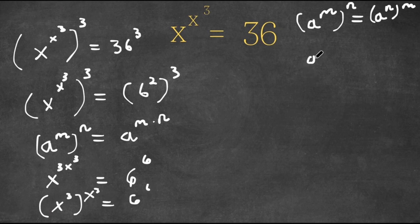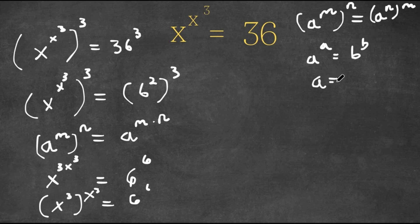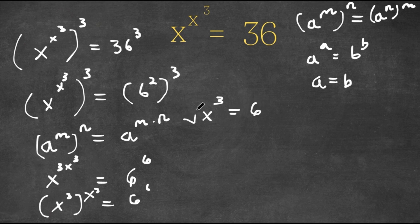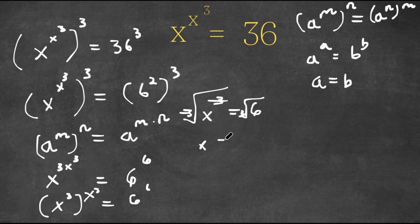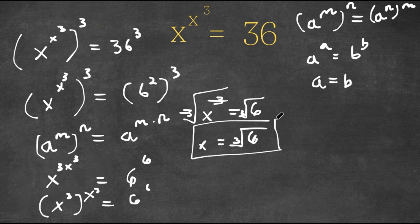So x to the power of 3 to the power of x to the power of 3 equals 6 to the power of 6. Now if we have something in the form a to the power of a equals b to the power of b, this means that a is equal to b. So in this case, x to the power of 3 is equal to 6. Taking the cube root on both sides, x is equal to the cube root of 6. So this is our answer, and this can also be written as 6 to the power of one third.